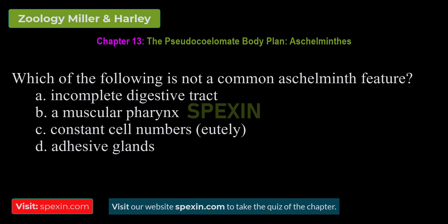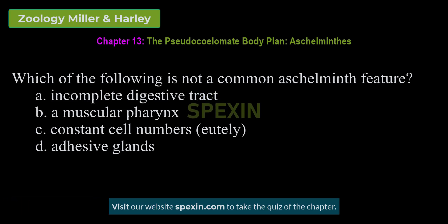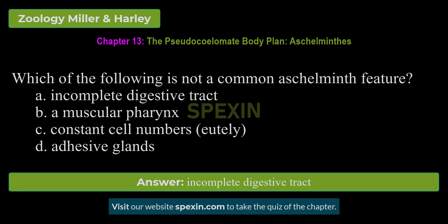Which of the following is not a common aschelminth feature? A. Incomplete digestive tract. B. A muscular pharynx. C. Constant cell numbers (eutely). D. Adhesive glands. Correct answer: Incomplete digestive tract.